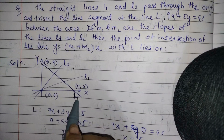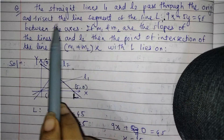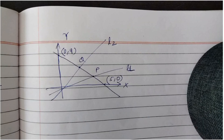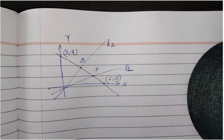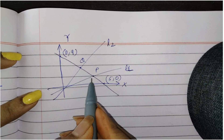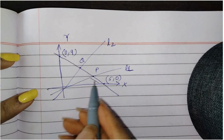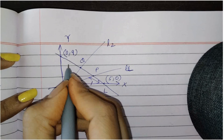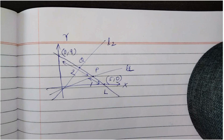Now we can find the two trisection points P and Q on line L using the information that it is trisected equally. Using the section formula, we can find the coordinates of P and Q. To find point P, we divide the segment in the ratio 2:1.